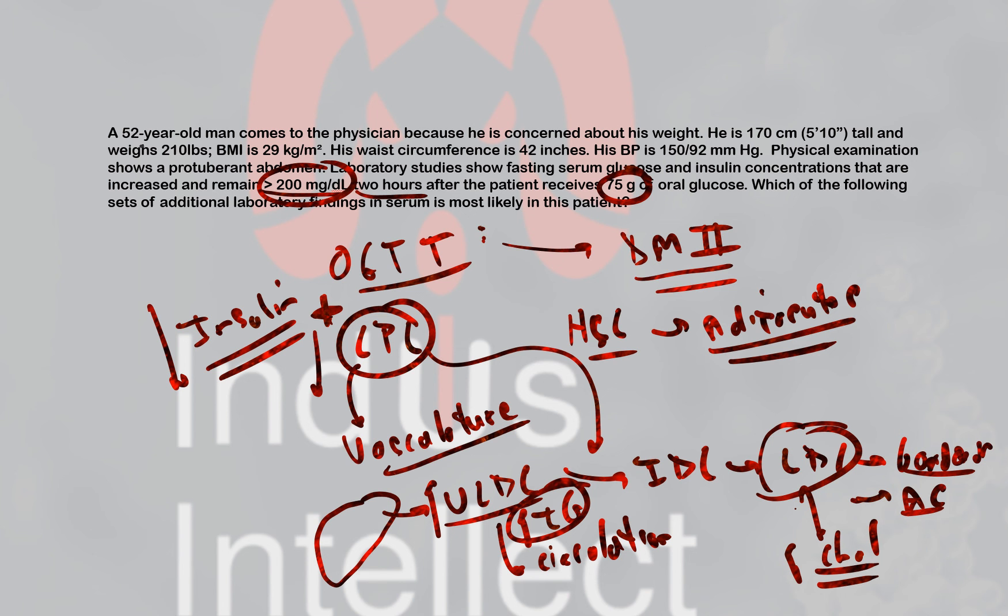Now, what insulin does normally on hormone-sensitive lipase is that it normally inhibits it. And so therefore, what happens here is that you would find that with that insulin, or lack of insulin, there would be increased hormone-sensitive lipase activity as well, which means that I would then bring about lipolysis. Because normally insulin is an anabolic hormone, which is responsible for lipogenesis.